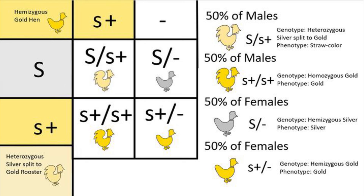The sixth and final pairing is a heterozygous silver split to gold male bred to a gold female. Because silver is incompletely dominant, sometimes it can be a little hard to tell if a male is homozygous silver or silver split to gold. If you have a male you're unsure about, this is a great pairing to use, since you can get gold offspring in either sex, meaning half the offspring should be gold. Of course, this is assuming you hatch a good number of chicks to get a good sample size. In this pairing, 50% of the female offspring will be hemizygous for silver and 50% will be hemizygous for gold. Of the male offspring, 50% will be silver split to gold and 50% will be gold.